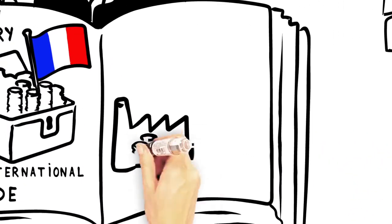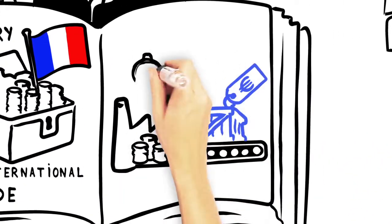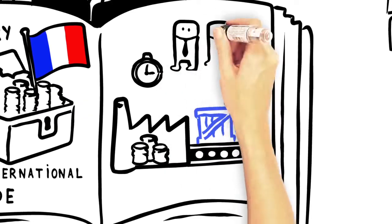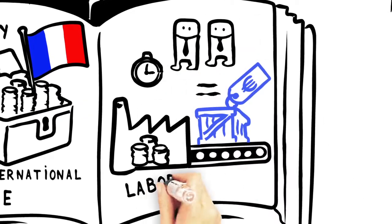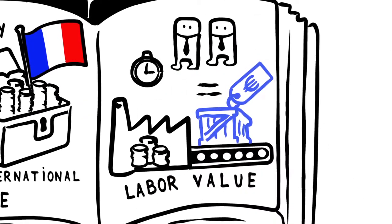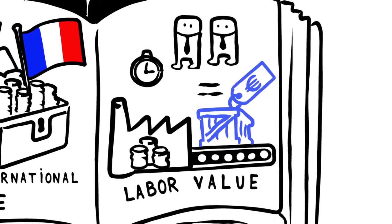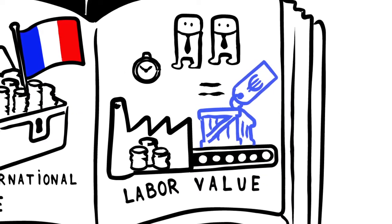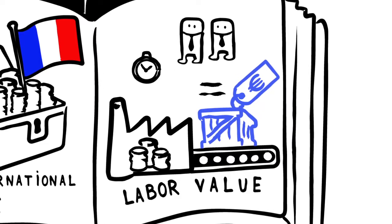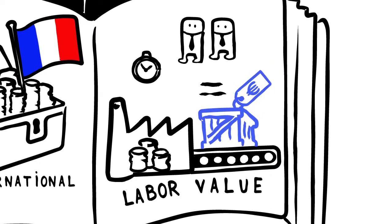Indeed, according to Ricardo, the value of a good depends on the amount of labor required for its production. We call this labor value. For this reason, the lower the number of labor hours to produce the good is, the lower its production cost is, and therefore the more attractive its price is.